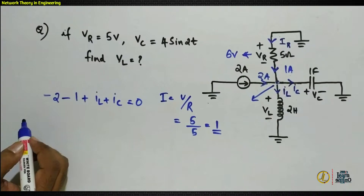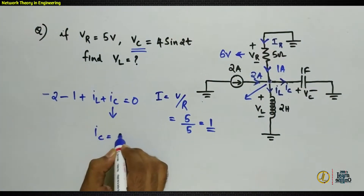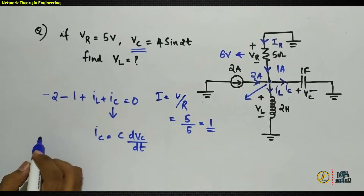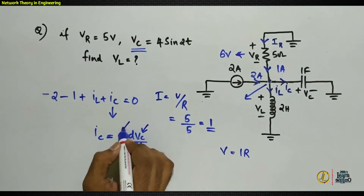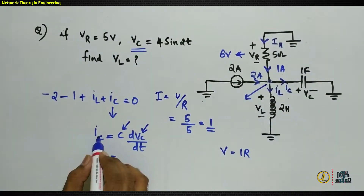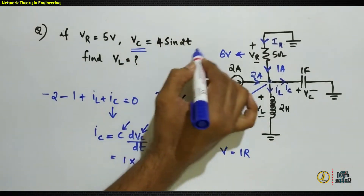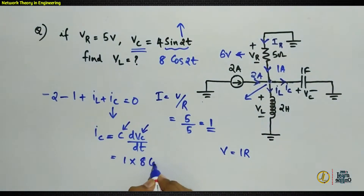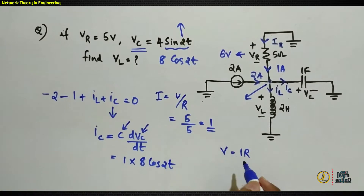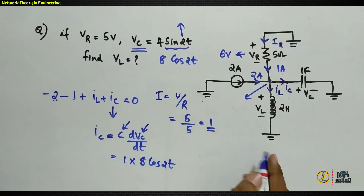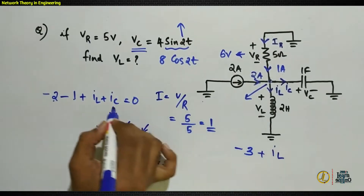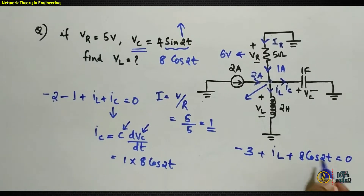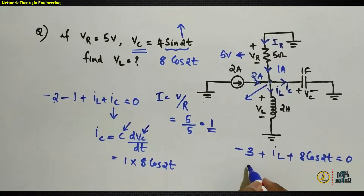Since VC equals 4 sin 2t, the capacitor current is IC = C · dVC/dt. The capacitance is 1 farad and VC is 4 sin 2t, so IC = 1 × d(4 sin 2t)/dt = 1 × 8 cos 2t = 8 cos 2t. Substituting into the KCL equation: −1 − 2 + IL + 8 cos 2t = 0, which simplifies to −3 + IL + 8 cos 2t = 0.